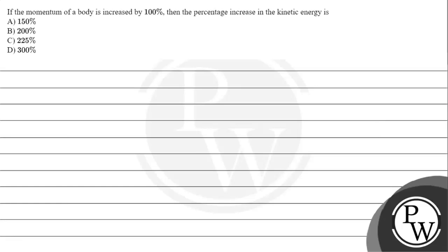Hello, let's read the given question. The question says: if the momentum of a body is increased by 100%, then the percentage increase in the kinetic energy is: option A 150%, option B 200%, option C 225%, option D 300%. In this question we need to understand the concept of the relation between momentum and kinetic energy.